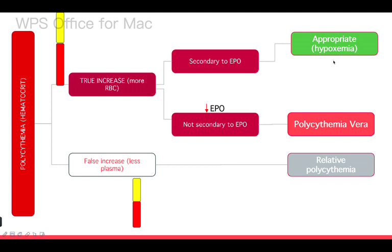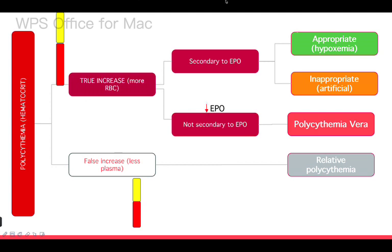When the true increase in red blood cell mass is secondary to erythropoietin, that erythropoietin could come through the natural pathway due to low oxygenation — this is appropriate polycythemia, in the context of hypoxemia where we need to increase oxygen-carrying capacity. Or erythropoietin may come from a different pathway — not due to hypoxemia but from a malignancy or exogenous source like athlete abuse — making it inappropriate. In both secondary polycythemia types, erythropoietin is increased, while in polycythemia vera it is decreased. All types show increased hematocrit, but only true polycythemia shows increased red blood cell count.